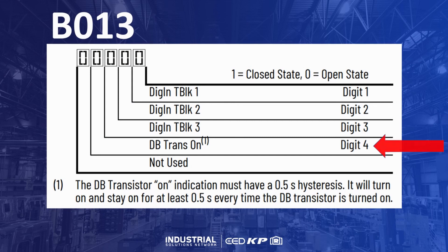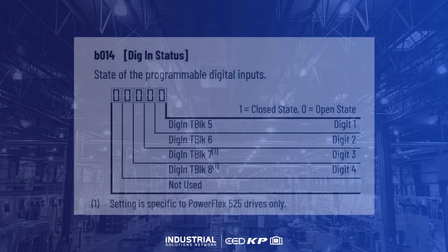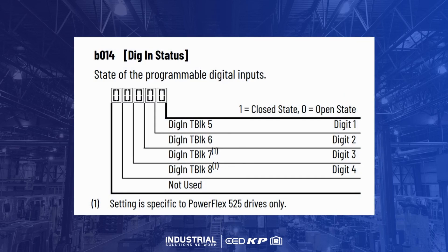The next digit will indicate if a dynamic brake is engaged, and the last digit is always displayed as 0. For parameter B14, the first four digits from left to right indicate the status of terminals 5 through 8, respectively. The fifth digit is always displayed as 0.